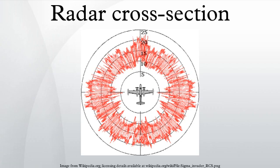More precisely, the RCS of a radar target is the hypothetical area required to intercept the transmitted power density at the target such that if the total intercepted power were re-radiated isotropically, the power density actually observed at the receiver is produced.